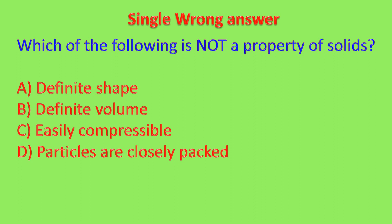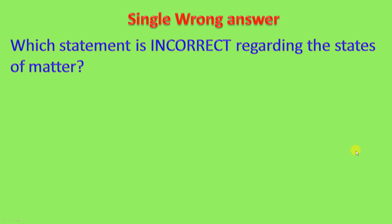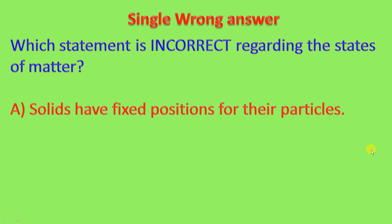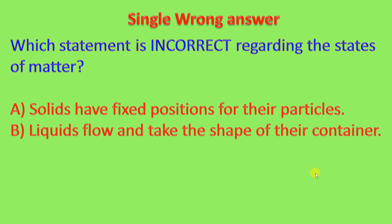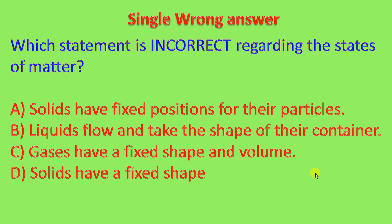Next question: which statement is incorrect regarding the states of matter? The options are: solids have fixed positions for their particles; liquids flow and take the shape of their container; gases have a fixed shape and volume; solids have a fixed shape. We have to find which statement is incorrect. Gases have a fixed shape and volume — this statement is incorrect. That's why the answer is C.